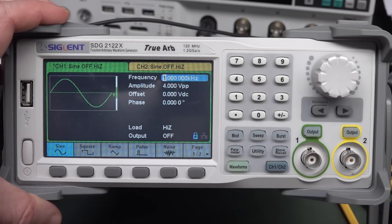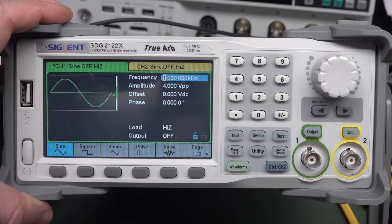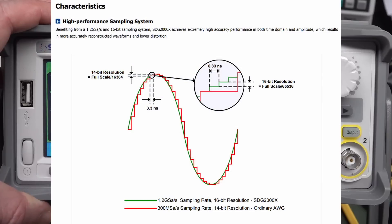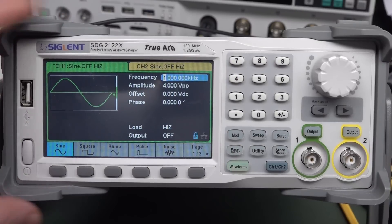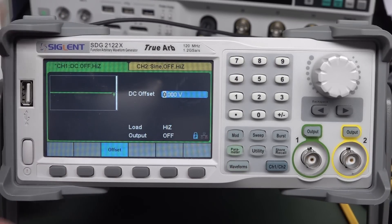Modern arbitrary waveform generators don't generate the signal analog like old-school ones did. They generate them using, typically, a 16-bit digital-to-analog converter. And with that higher resolution analog-to-digital converter, you can actually get really nice steps on this.